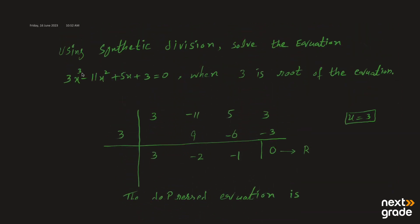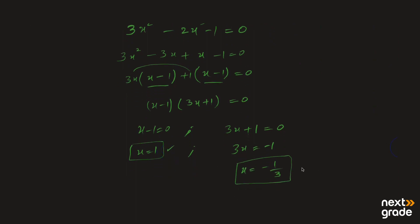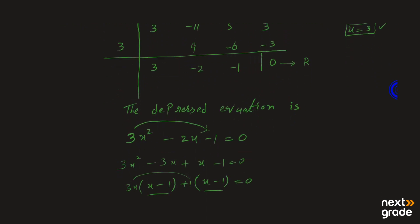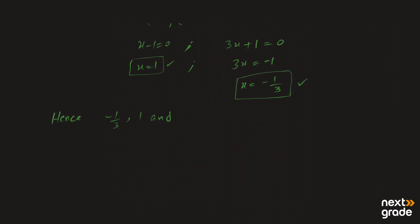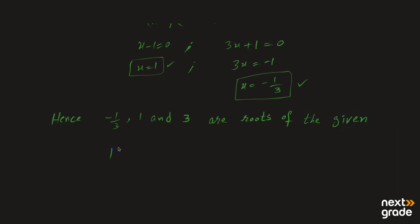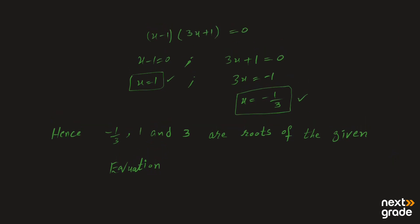تو ہم نے اس cubic equation کو solve کر لیا۔ اس کی power 3 ہے تو اس کے roots بھی 3 ہوں گے — ہمارے پاس بھی 3 answers آ چکے ہیں۔ Hence, minus 1/3، 1، اور 3 (جو root پہلے سے given تھا) — یہ تینوں roots of the given equation ہیں۔